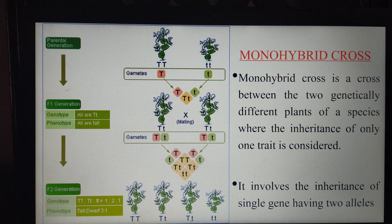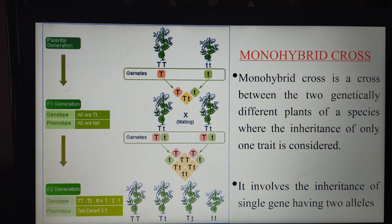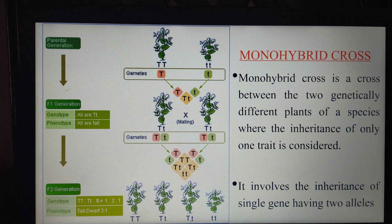Let us see the definition for monohybrid cross. Monohybrid cross is a cross between two genetically different plants of a species, where the inheritance of only one trait is considered. It is a cross where two genetically different plants of the same species are crossed, and if only one character is considered, then the cross is said to be a monohybrid cross.